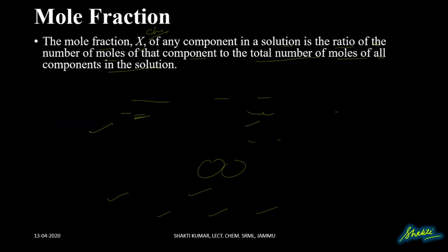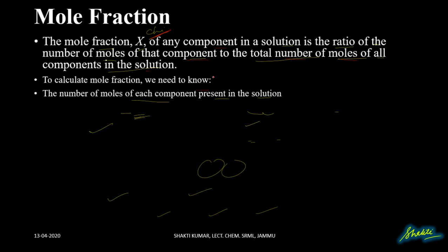Mole fraction, represented by chi of any component in a solution, is the ratio of the number of moles of that component to the total number of moles of all the components in the solution. To calculate mole fraction, we need to know the number of moles of each component present in the solution.